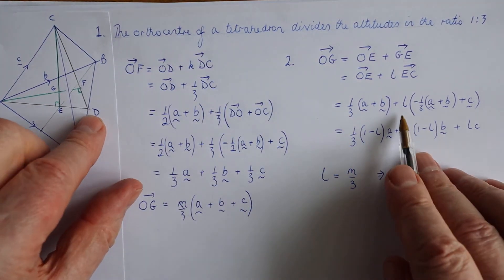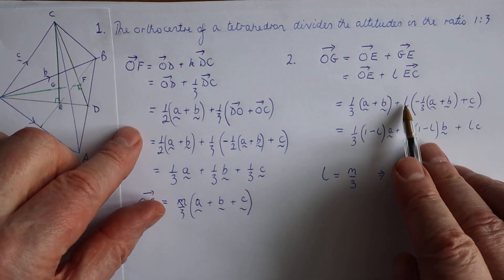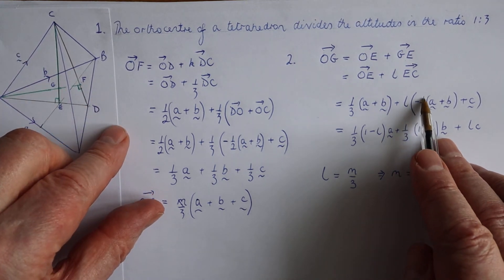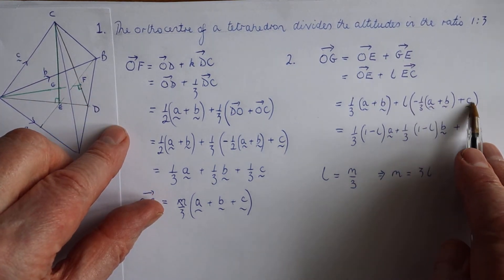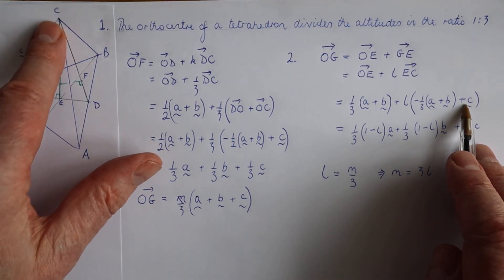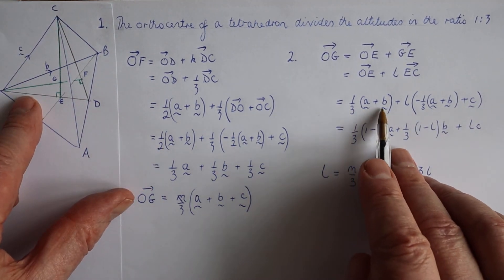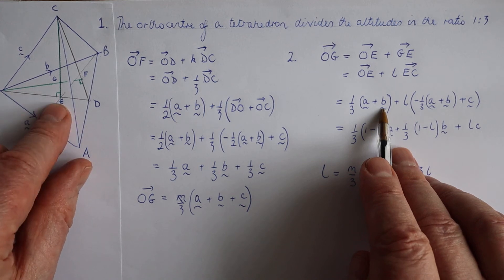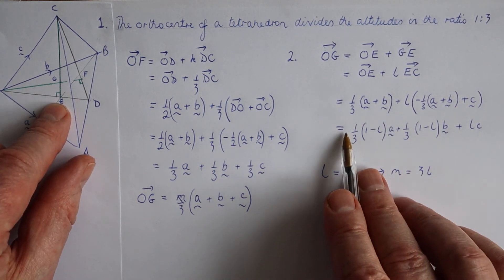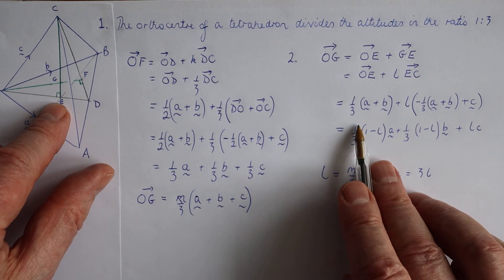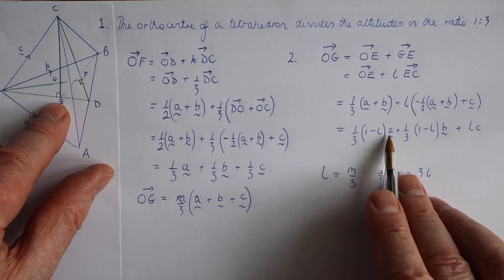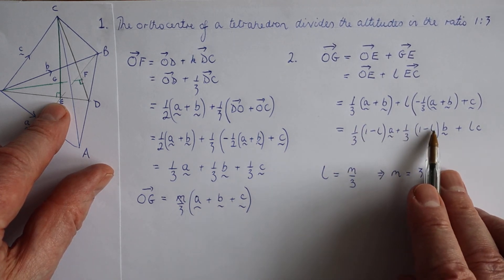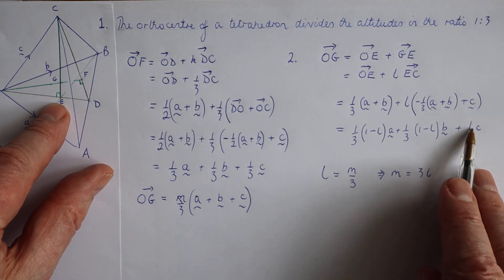So we can see that's been written out here for us. L times negative a third A plus B plus C, that's the EO to OC, and one third of A plus B is OE, going the other direction. When we simplify this, we have one third of one minus LA, and one third of one minus LB, and LC.